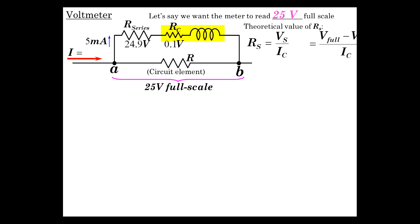The theoretical value then that resistance is the voltage across it divided by its current, and we already know what that voltage is. But it's the full scale reading minus whatever is across this full scale minus V coil over the current in the coil. So 24.9 over 5 milliamps is 4.98 k ohms.